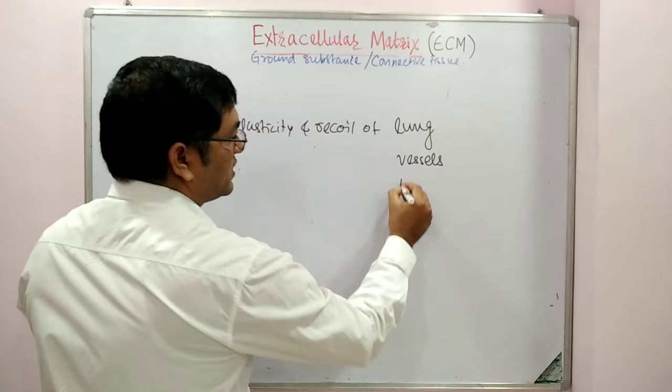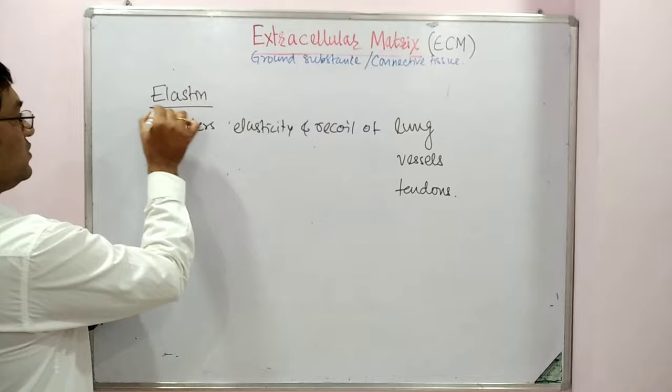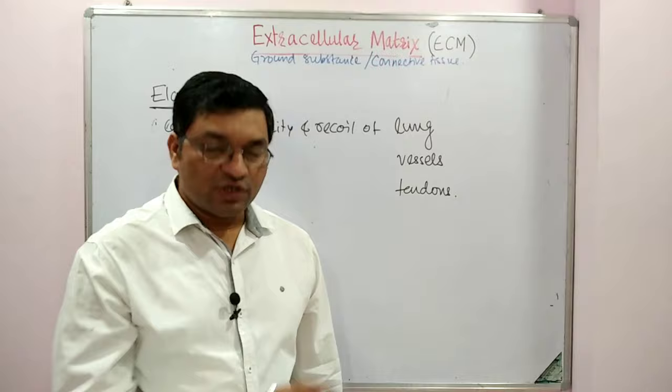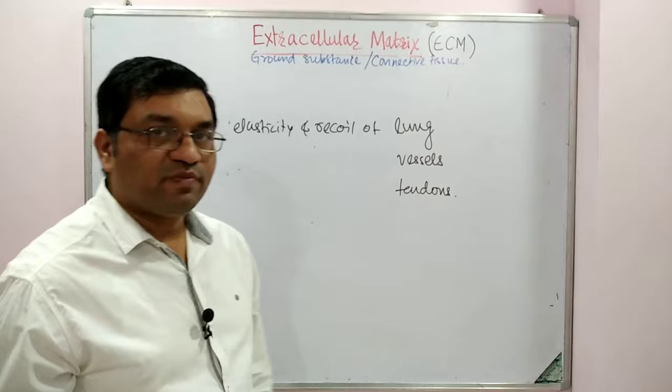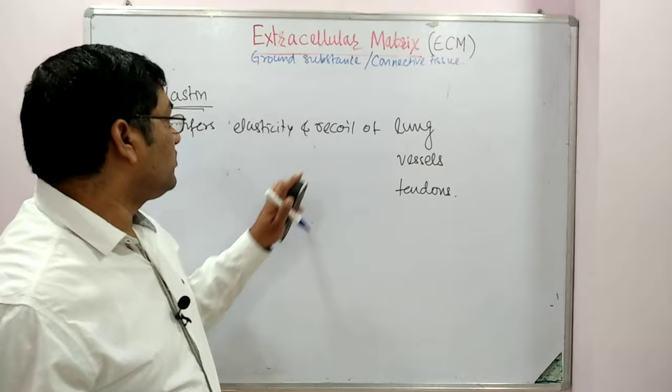Elastin is formed from proelastin. It has a simple structure — no triple helix and no glycine-X-Y repeat. Only hydroxylation of proline occurs as a post-translational modification; no hydroxylation of glycine. This structure is responsible for elasticity and recoil of various tissues.